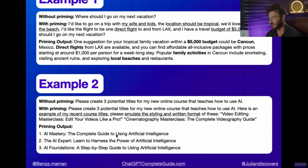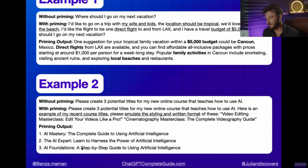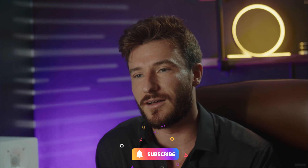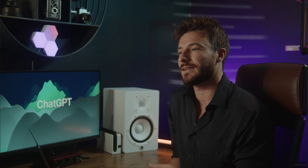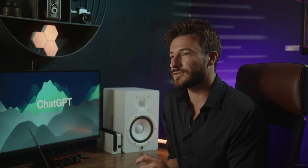Here were the outputs: AI Mastery: The Complete Guide to Using Artificial Intelligence; The AI Expert: Learn to Harness the Power of Artificial Intelligence; and AI Foundations: A Step-by-Step Guide to Using Artificial Intelligence. Now you should understand how important and effective prompt priming is. Whether you're training the model on pages of your past writing style or just giving more context and guidelines for ChatGPT to follow, this is going to help you really start to use prompt engineering and get more effective outputs.